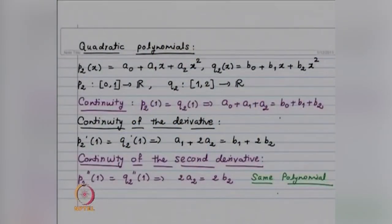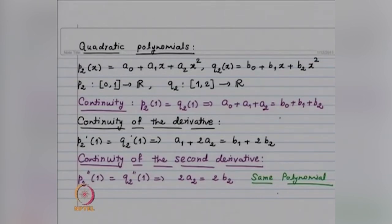When we demand continuity or continuity of derivatives, each such condition reduces the degrees of freedom by 1. We will now consider n intervals, with a polynomial on each interval. We will first look at the dimension of such a space, then move to piecewise quadratic and piecewise cubic cases.